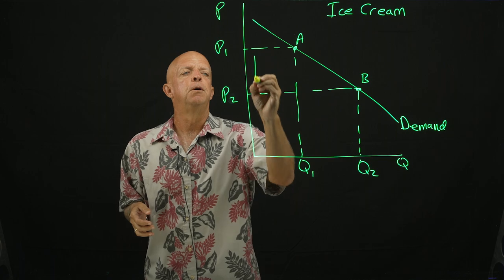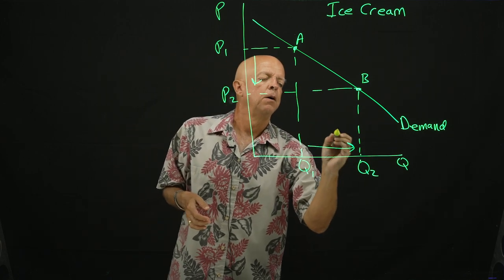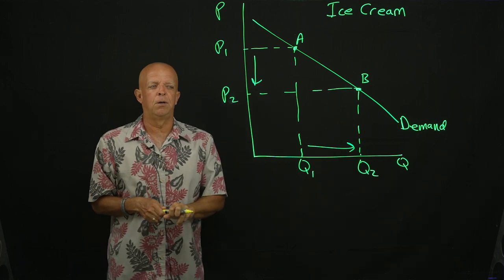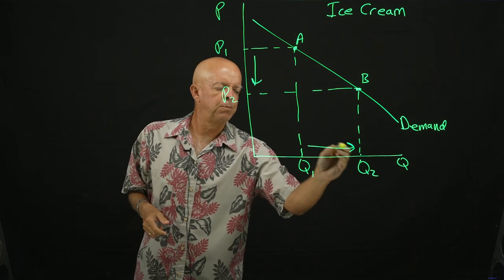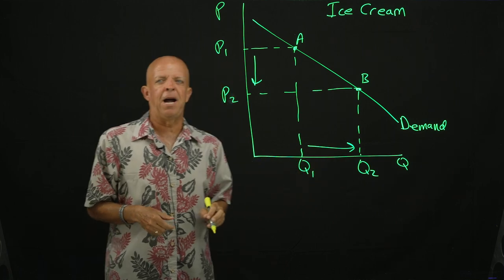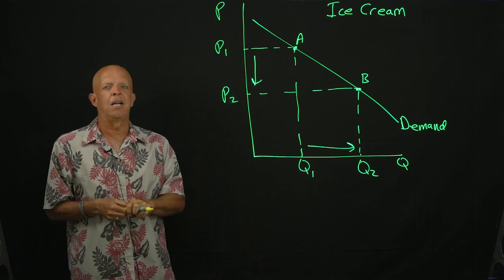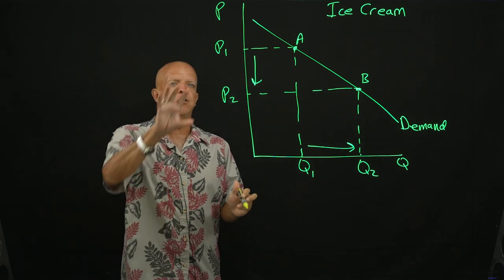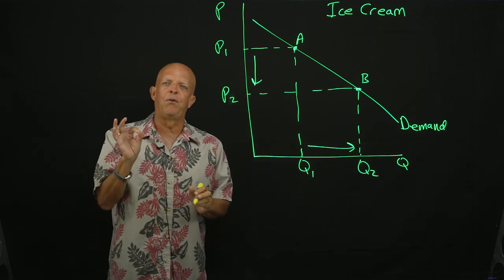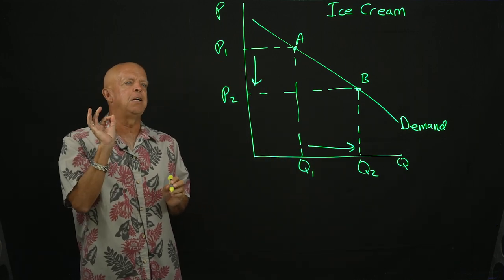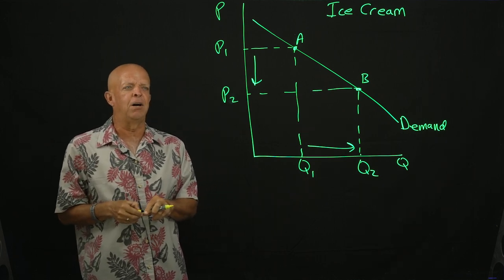So, the price of the ice cream versus the quantity of the ice cream. And what the demand curve shows is a relationship between the price and the quantity. If you drop the price, the quantity will go up. And this particular is the quantity demanded for the ice cream. So, it's a relationship that we say between the quantity demanded. This is price. This is quantity demanded.